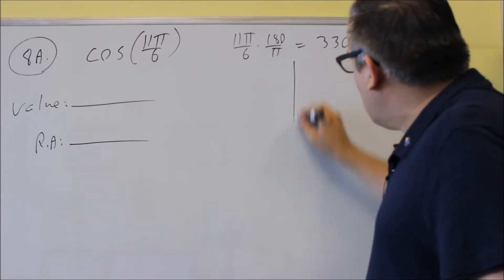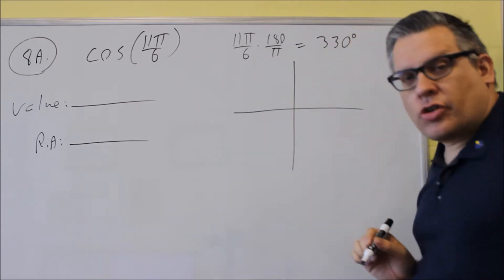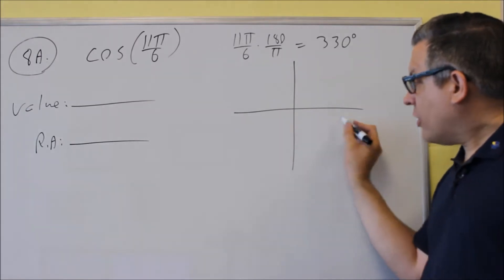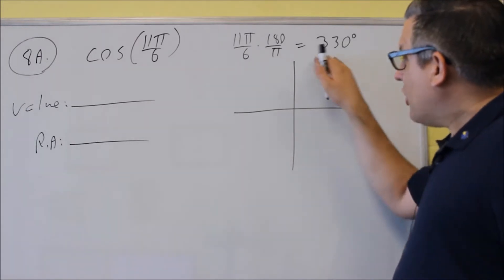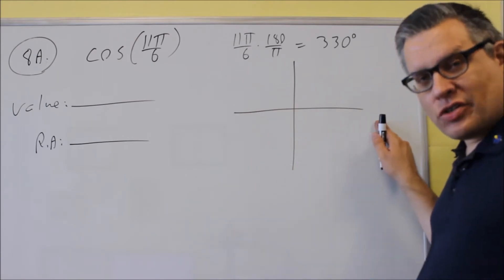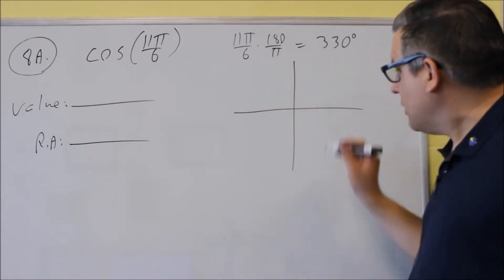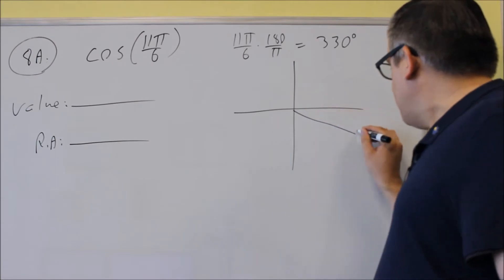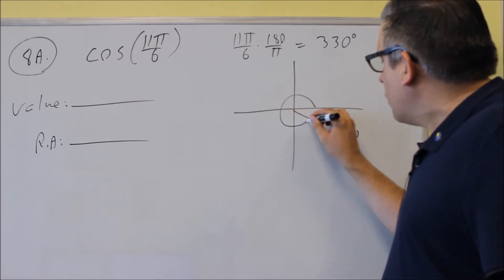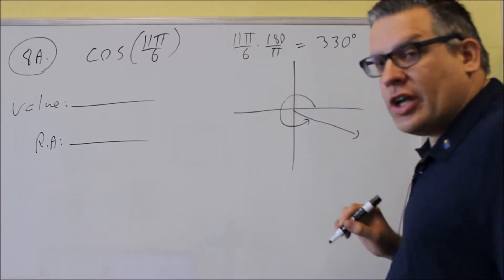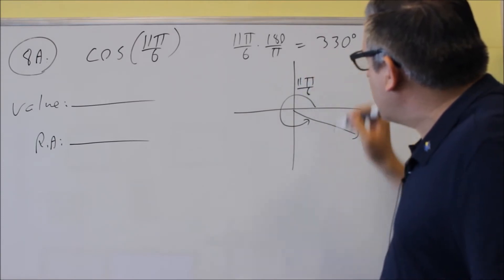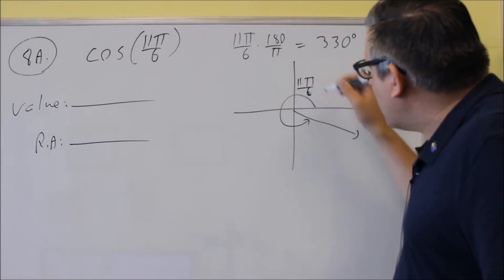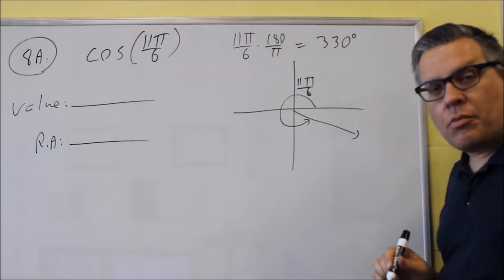So as far as the angle is concerned, 330 would be down here in the fourth quadrant. It goes 0, 90, 180, 270, and 360. So it's going to be in this quadrant here. This would be what it would look like in standard position. I'm going to label it as 11 pi over 6 because the original angle was given in radians.